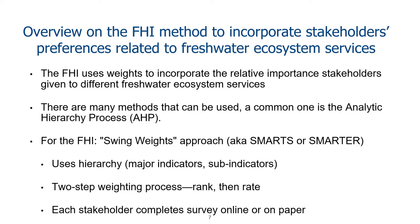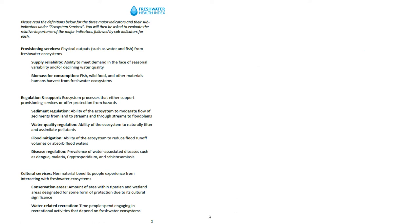There are two steps to the weighting process. First, the stakeholder ranks and then rates. Each stakeholder completes an online survey, or the survey can be done on paper. This is an example of the actual swing exercise. We first provide definitions of the ecosystem services that are being covered by this specific survey.